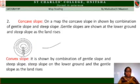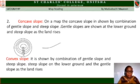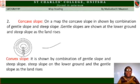Concave slope. On a map, a concave slope is shown by a combination of gentle slope and steep slope. Gentle slopes are shown at the lower ground and steep slopes as the land rises. From the diagram, you can see that the contour lines from 50 to 100 are spaced out, and 100 to 150 are also spaced out, but as the land rises the contour lines are close together. The diagram shows the nature of a concave slope.